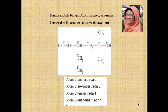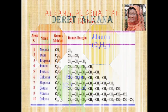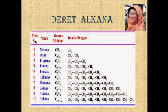Berikutnya kita bahas Alkana, Alkena, dan Alkuna. Alkana rumus umumnya adalah CnH₂ₙ₊₂, di mana n menunjukkan jumlah atom C. Sedangkan Alkuna rumus umumnya CnH₂ₙ₋₂. Untuk kesempatan kali ini kita bahas Alkana dulu. Jika atom Cnya 1, maka dari rumus CnH₂ₙ₊₂: C = 1, H = 2×1+2 = 4. Berarti kalau C = 1, H = 4. Namanya metana, rumus molekulnya CH₄.